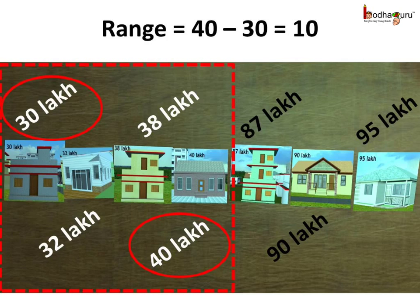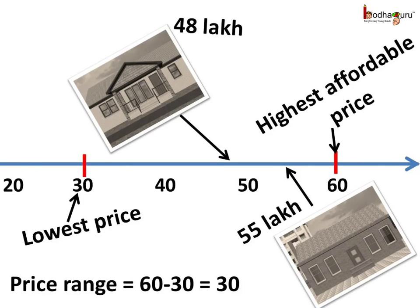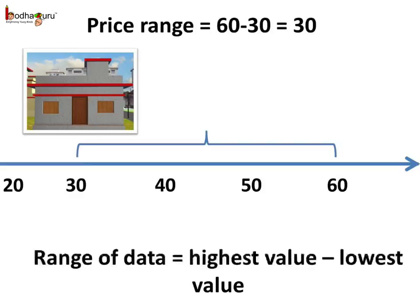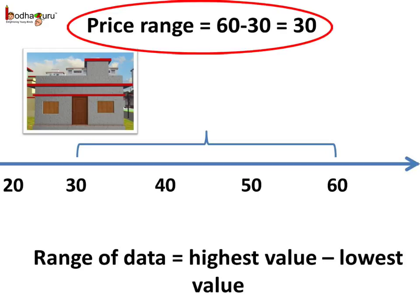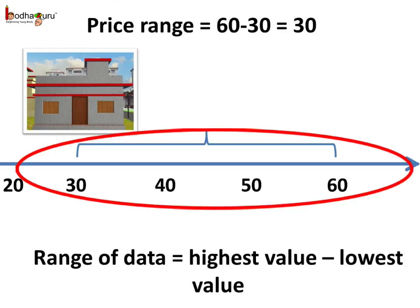Now suppose he had 60 lakh rupees to buy the house. Now he could choose all the houses costing within 60 lakhs — like 48 lakh, 50 lakh, and even the house worth 55 lakh. The lowest price he could find was 30 lakhs and now he could afford till 60 lakhs. So 60 minus 30 is equal to 30. This is the range of price data. On a number line, the range starts from 30 and extends by 30.